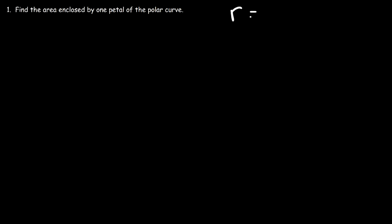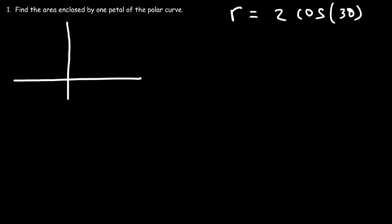Now let's work on another similar problem. This time, r is going to equal 2 cosine 3 theta. So just like before, we're going to make a graph. If you need help making these graphs, you can check out a video I created on graphing polar equations — I'm going to put that in the description of this video. There's also another video where I show you how to graph these equations online.